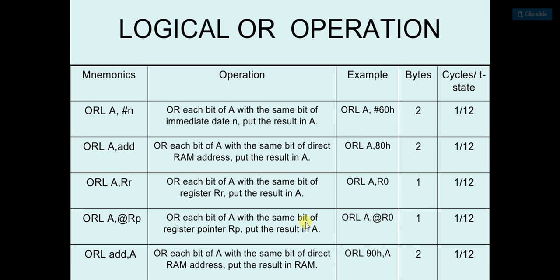Now suppose A is equal to 30H, so it will do the OR operation of each bit of A with the 60H binary form of 60H and it will store the answer in accumulator. So that's it, this is the OR operation.